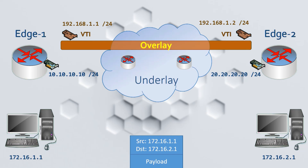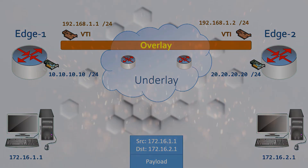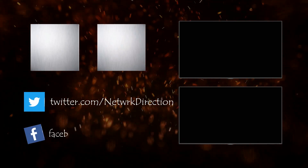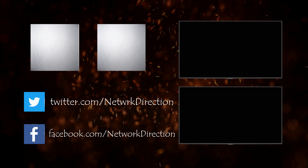So we have a tunnel that we can route traffic over — but there's a catch. GRE tunnels are not encrypted by default. That's a serious concern if you're building a tunnel over the internet. We can add encryption using IPsec, which is exactly what we're going to cover in the next video.